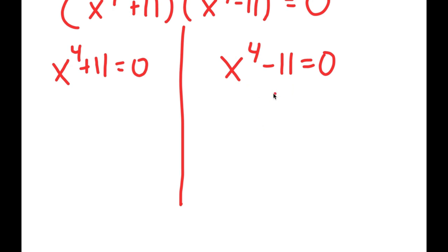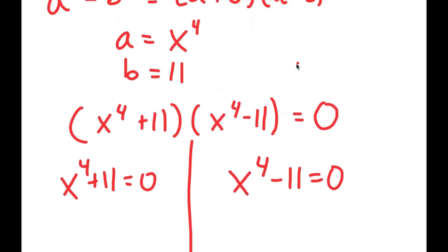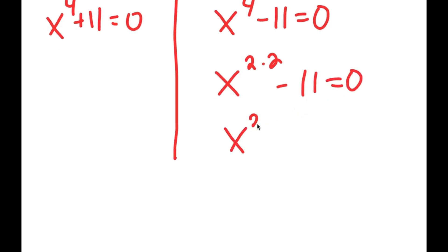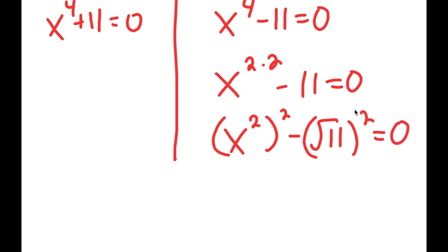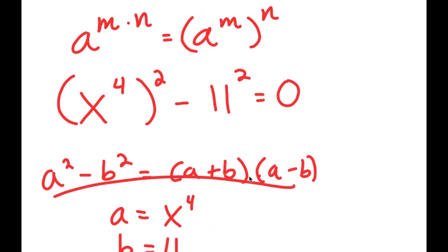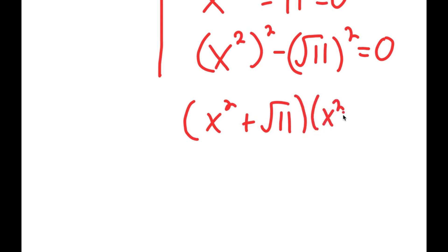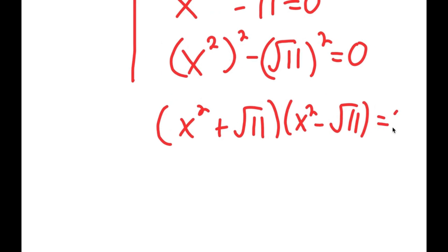We're still not done. Instead of just taking the fourth root, we do the same thing as before. I rewrite x to the power of 4 as x squared to the power of 2, and rewrite 11 as the square root of 11 squared. Applying the difference of squares again, I get x squared plus the square root of 11 times x squared minus the square root of 11 equals 0, giving two more equations.